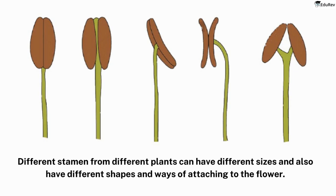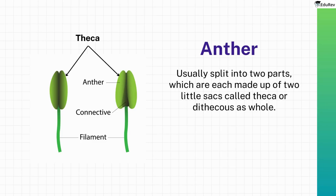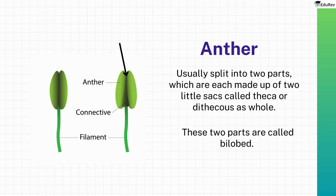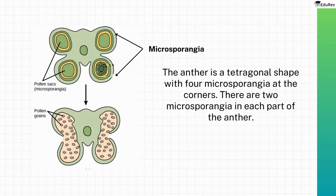An angiosperm anther is a part of the flower that helps make pollen. It's usually split into two parts, which are each made up of two little sacks called theca, or dithecous as a whole. These two parts are called bilobed. You can see a groove that runs down the middle of the anther. If you cut the anther in half, you'll see how it's organized and the different types of tissue that make it up. The anther looks like a four-sided tetragonal shape with four microsporangia at the corners, which are structures that make pollen.